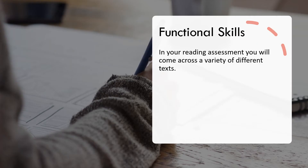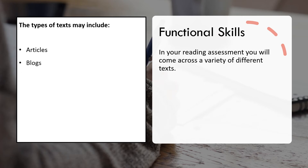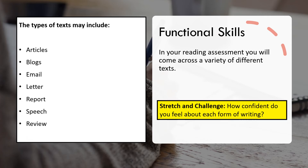In your reading assessment you'll come across a variety of different texts, including articles, blogs, emails, letters, reports, speech, and reviews — and those are generally the main types you'll have to deal with. Be aware that when people come to their assessments they often favour certain forms of writing more than others. A good habit to get into is to make sure you feel confident and comfortable with each form of writing. Think about how well you can interpret them and whether you understand the actual purpose and the way they are laid out.